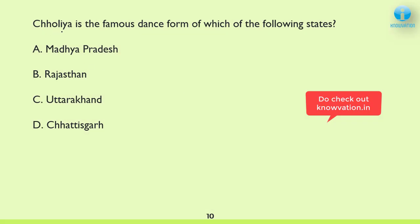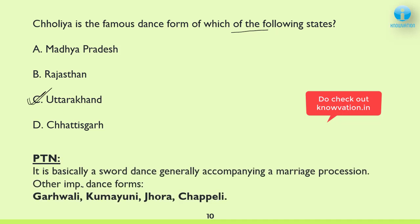Next: Chholia is the dance form of which of the following states? The correct answer is C — Uttarakhand. It is basically a sword dance generally accompanying a marriage procession, though it is not just limited to marriage processions. More important dance forms of Uttarakhand: Gharwali — very important — Kumayani, Jhora, and Chhapeli.